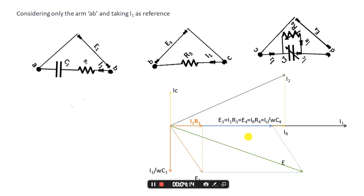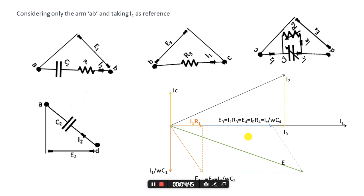We now have almost all the currents and voltages in this phasor. The only one left is E2. E2 is the voltage drop in arm AD. The current I2 is flowing through the capacitor C2 and the voltage is E2. In the balanced bridge, E1 will be equal to E2. From the circuit, I2 leads the voltage E2 by 90 degrees. Since E1 equals E2, we can write that in the phasor diagram, and we can see that I2 leads the voltage E2 by 90 degrees. This is the complete phasor diagram for a Schering bridge.